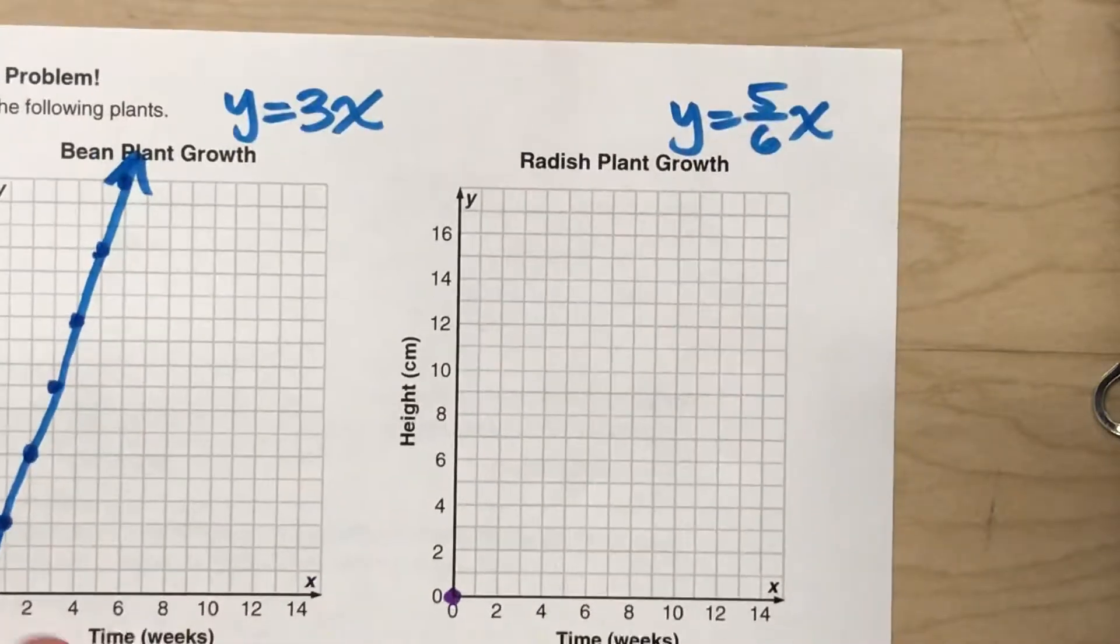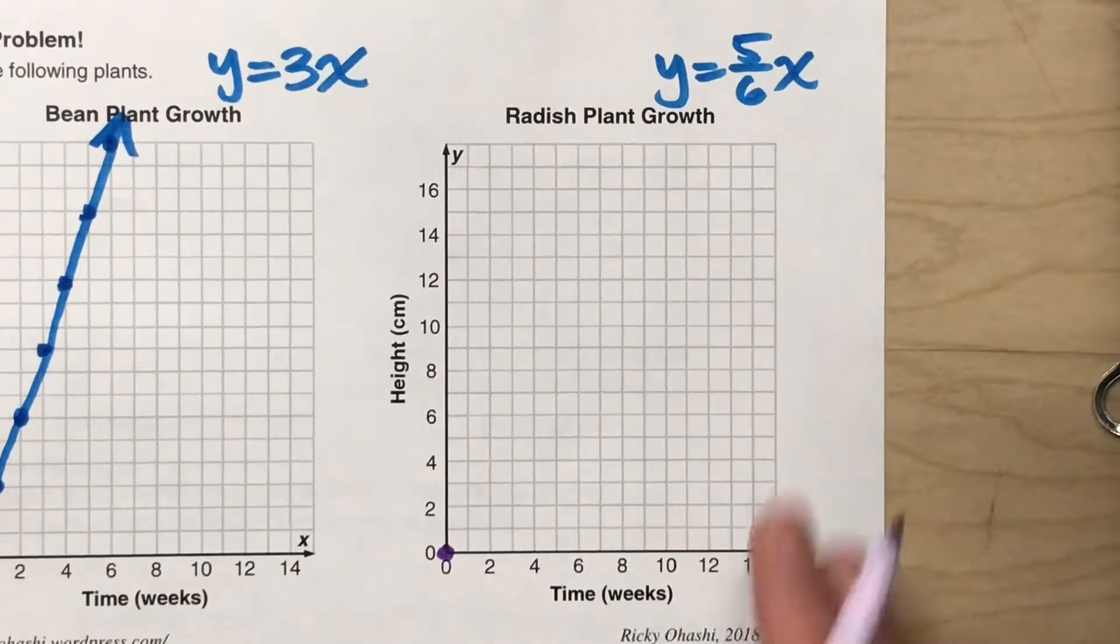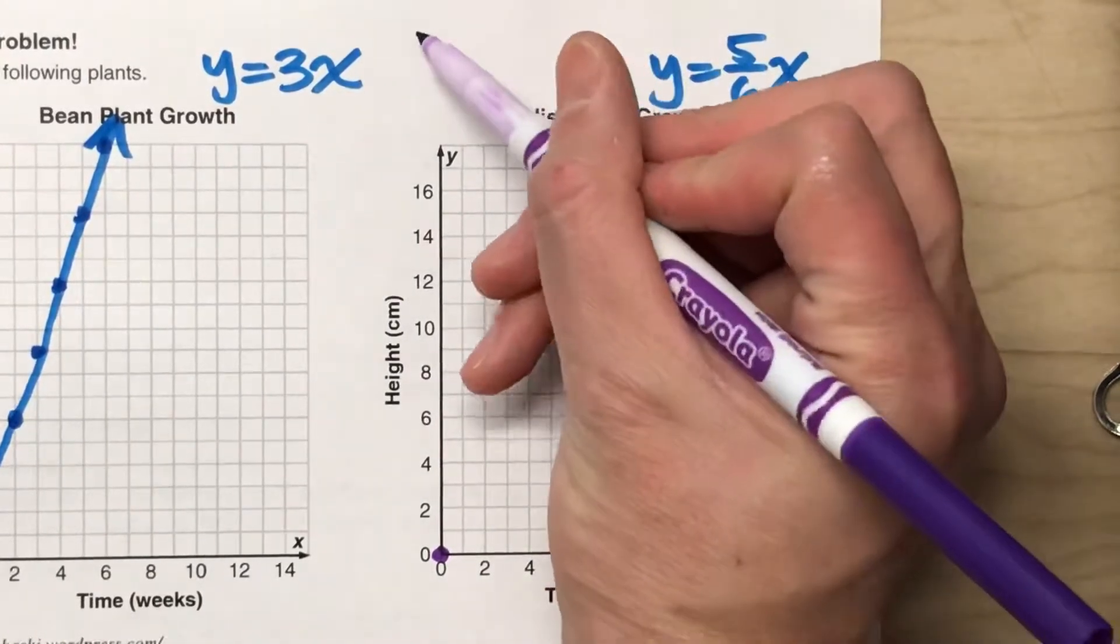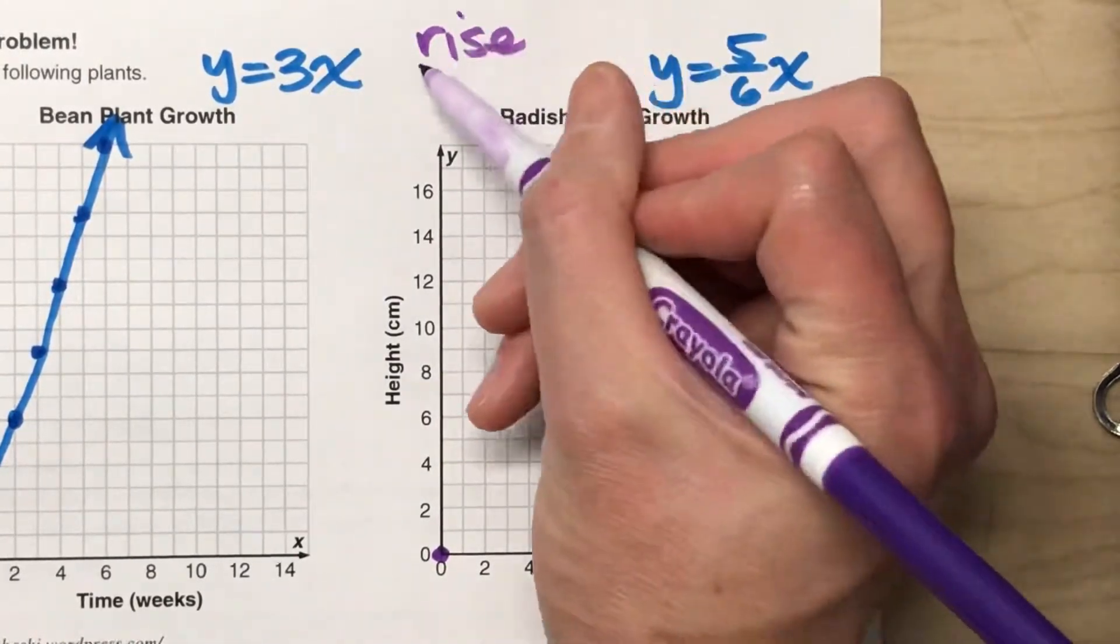So I showed you something, a little trick to graphing this. And it all comes back to slope and rise over run.